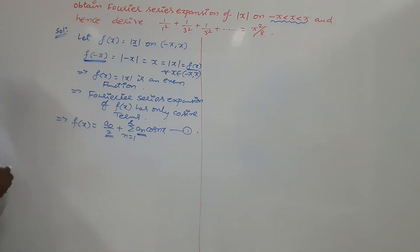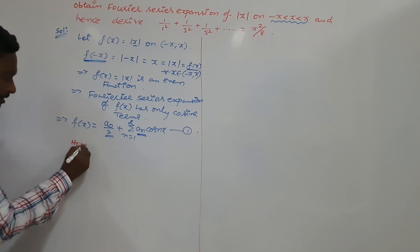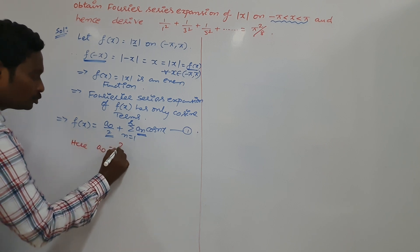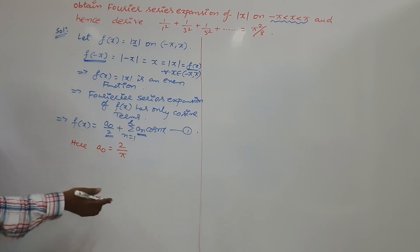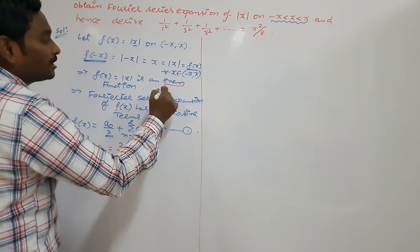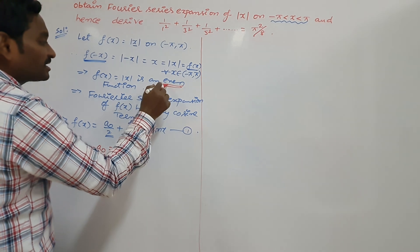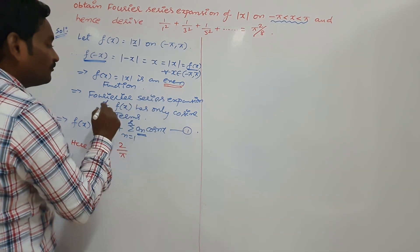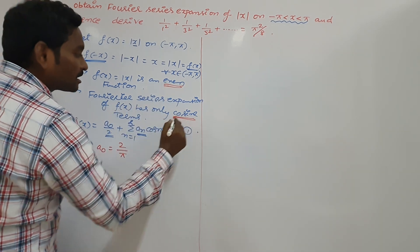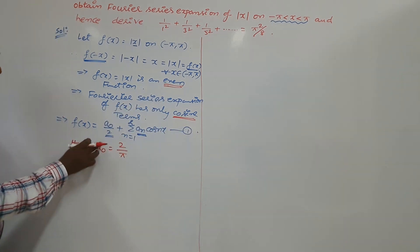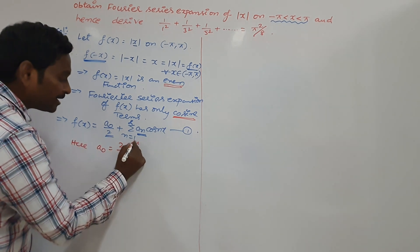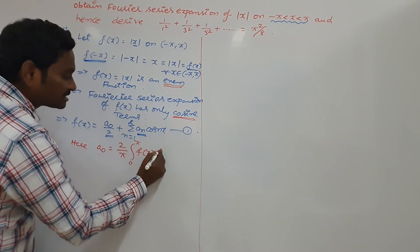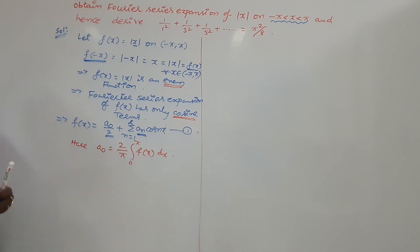What is the formula for a₀? Here, a₀ equals 2 by pi, because we are using the even and odd concept. Since the given function is even and the Fourier series has only cosine terms, we write a₀ as 2 by pi times the integral from 0 to pi of f of x dx.